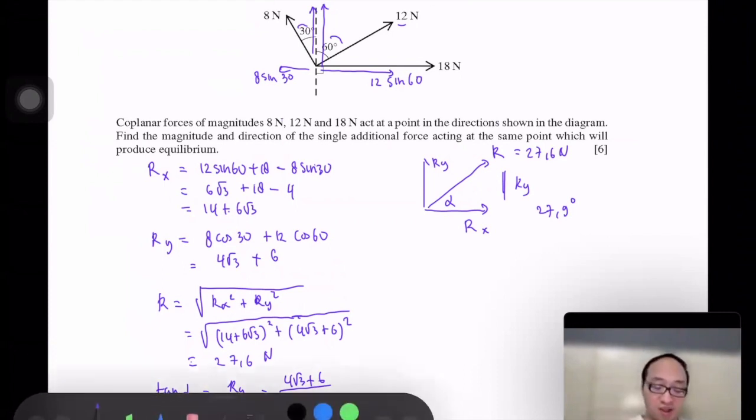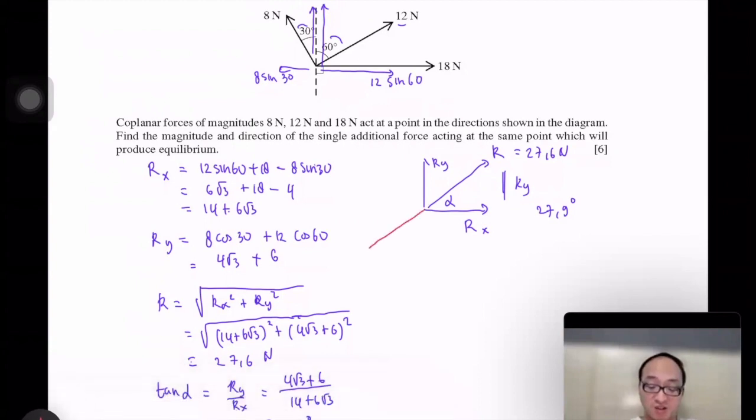Now, how do you make this system become an equilibrium? So that means you have to give an equal force working in the opposite direction. So you have to give an additional force with the same magnitude but opposite direction. So the direction is 27.9 degrees negative.